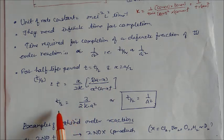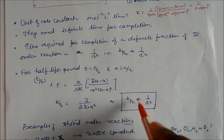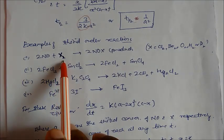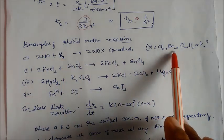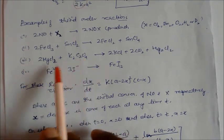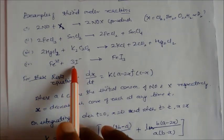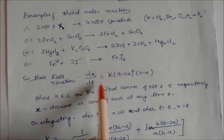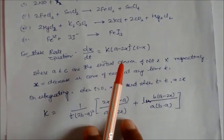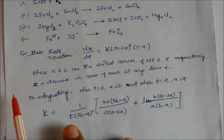Examples of third order reactions: NO reacting with X (where X can be Cl₂, Br₂, O₂, H₂, or deuterium) to give NOX products. FeCl₃ with Sn²⁺ is also a third order reaction. HgCl₂ with K₂C₂O₄ (potassium oxalate) is also third order. Fe³⁺ reacting with 3 iodide ions gives iron iodide — for this, the rate equation is dx/dt = k(A−2x)²(C−x), where A and C are initial concentrations of nitric oxide and iodide respectively, and x is the decrease in concentration of each reactant at time t.